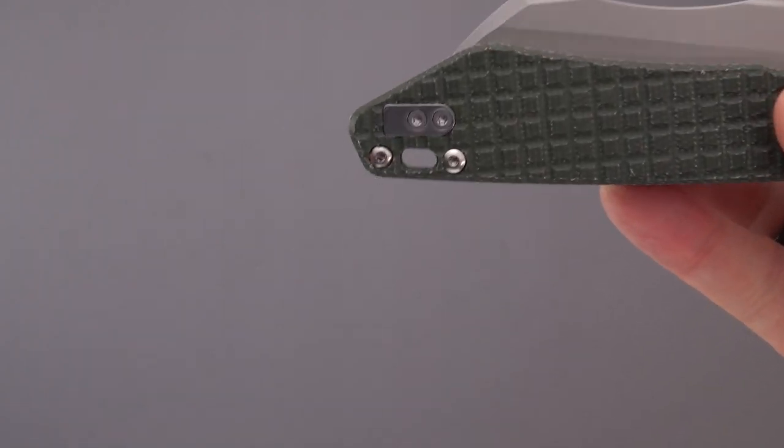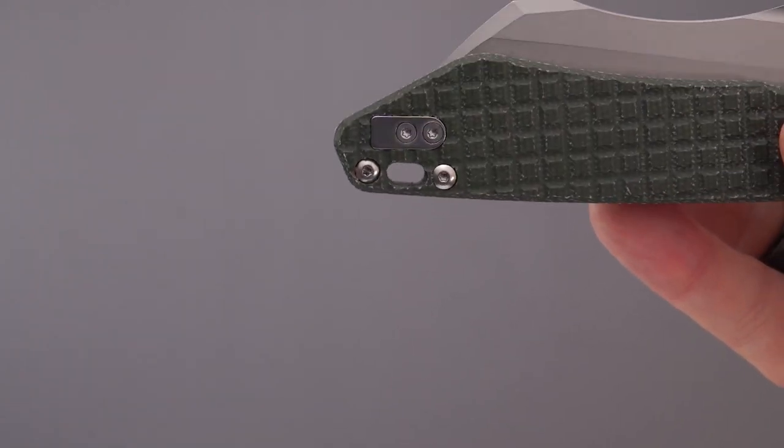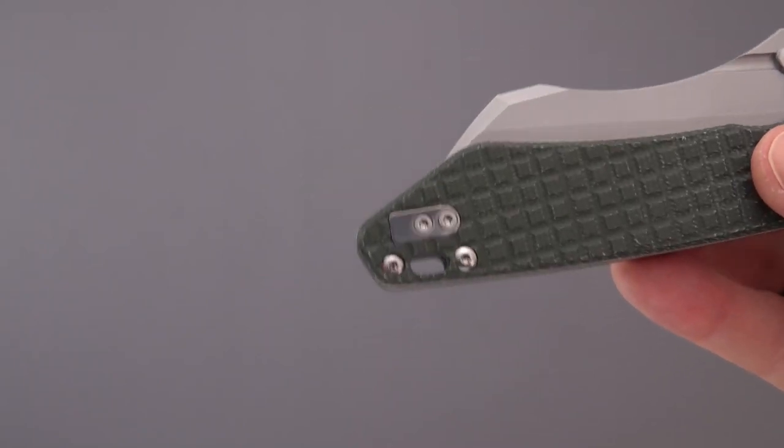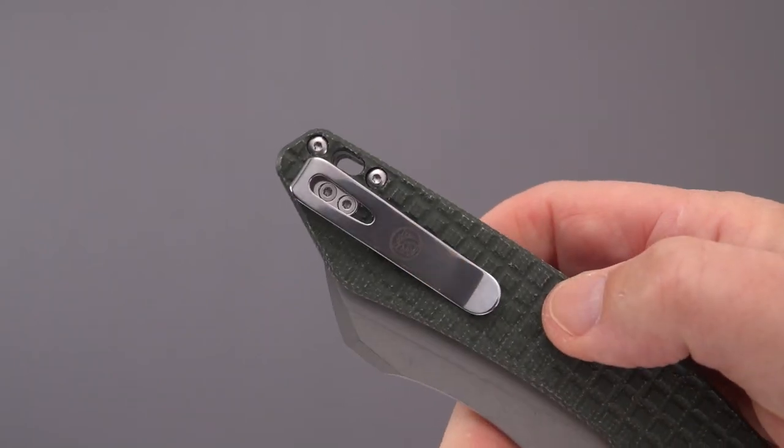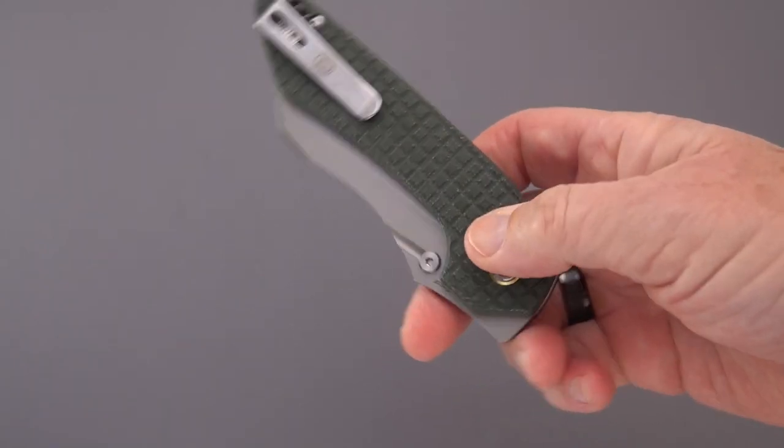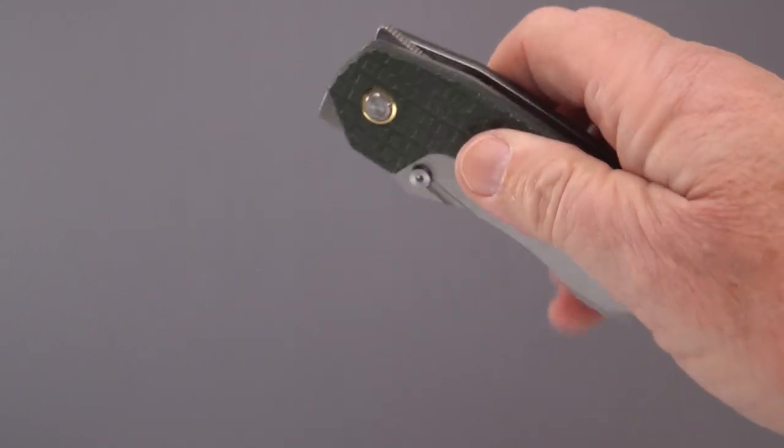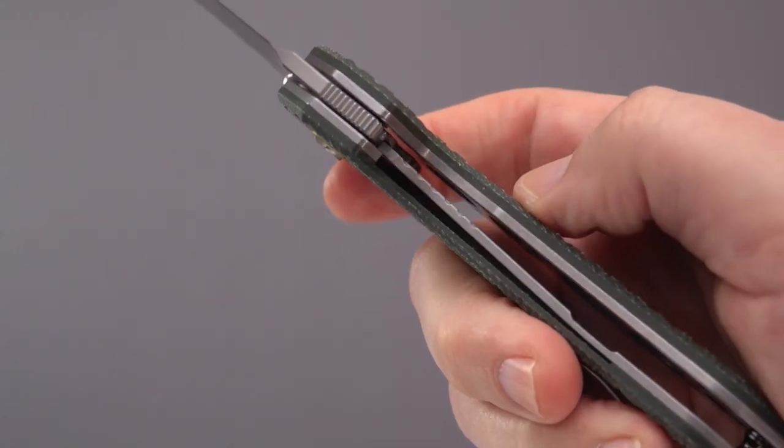At any rate, you can also, should you choose, simply put your finger on the blade and you can Spidey flick it out. So you really got four ways: you've got that, you've got the thumb stud, the back flipper, and the front flipper. And nothing protrudes so much that it gets in the way. We've got a beautiful slot there for those of you who are lanyard lovers.